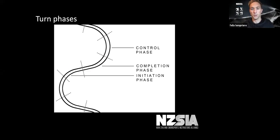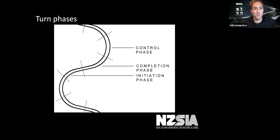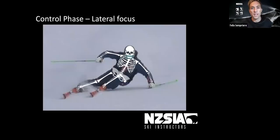So we're going to look at the three phases as mentioned earlier. We could have started at any phase of the turn, but we've decided to start at the control phase as it made sense for the movements we're going to talk about. So we're going to start with control, then completion, and then the initiation phase of the turn. I'm sure most of you guys are aware of these phases and have seen this image many times.